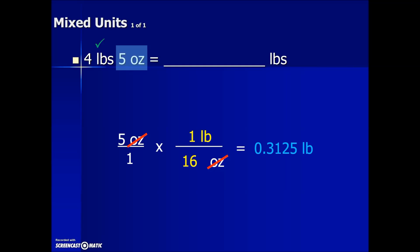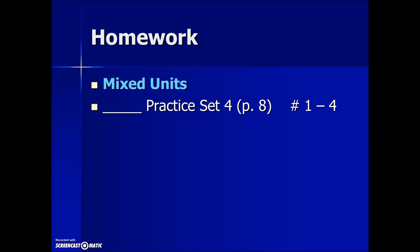We now can take that equivalent to the 5 ounces, combine it with the 4 pounds to give us a final single unit measurement that's equivalent to the given of 4.3125 pounds. For additional practice, look in your textbook on page 8.